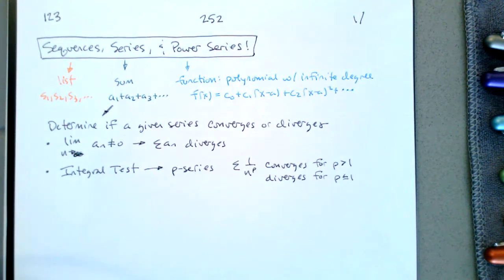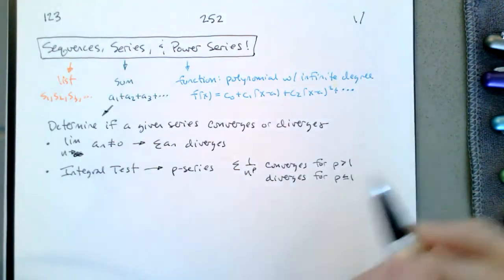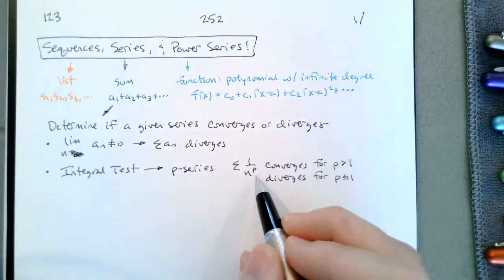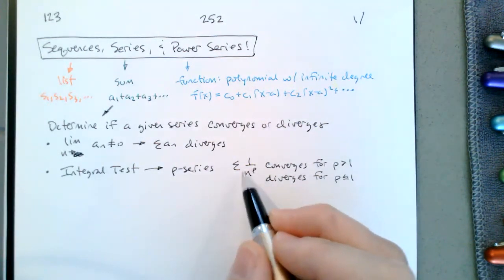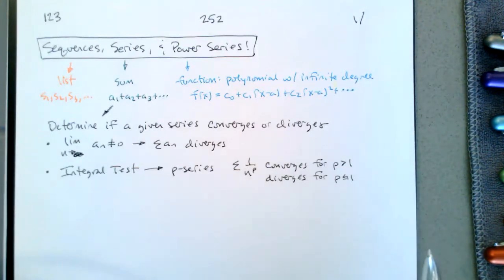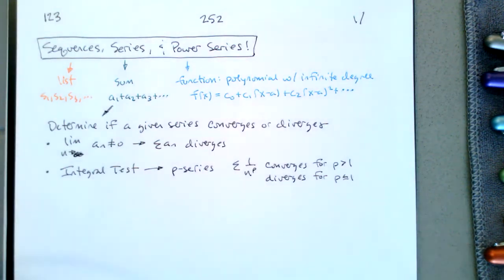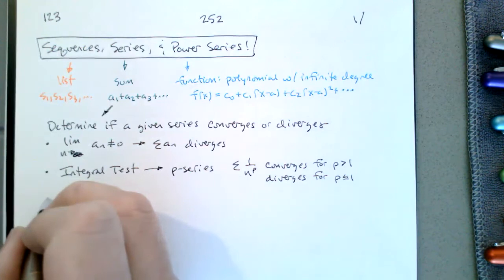P-series gives us something where it's easy to determine if a series converges or diverges. It makes sense that this is tied to the integral test, because we're looking at an antiderivative when we add 1 to the exponent. If p is greater than 1 and in the denominator, then when we add 1 to the exponent, n is still in the denominator, so 1 over n goes to 0. In general, we want to avoid integrating things because that could end up being a lot of work.